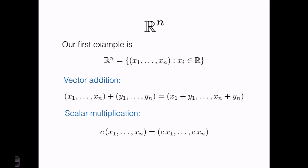We defined scalar multiplication as follows. If we have some scalar c — so c here is just some real number — and we multiply that by the vector x, with components x1 through xn, the result is just to multiply every coordinate by c. So our new vector becomes c times x1, c times x2, up to c times xn.